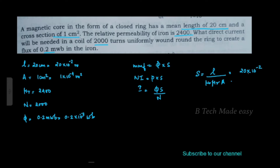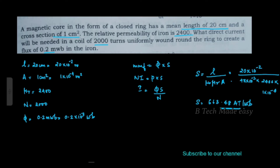Reluctance S is equal to L divided by mu0 times muR times A: that is 20 into 10 raise to minus 2 divided by 4 pi into 10 raise to minus 7 into 2400 into 1 into 10 raise to minus 4, which gives 663.48 turns per weber.